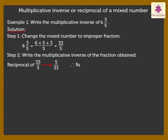Thus, the Reciprocal of 6 and 3 upon 5 is 5 upon 33.